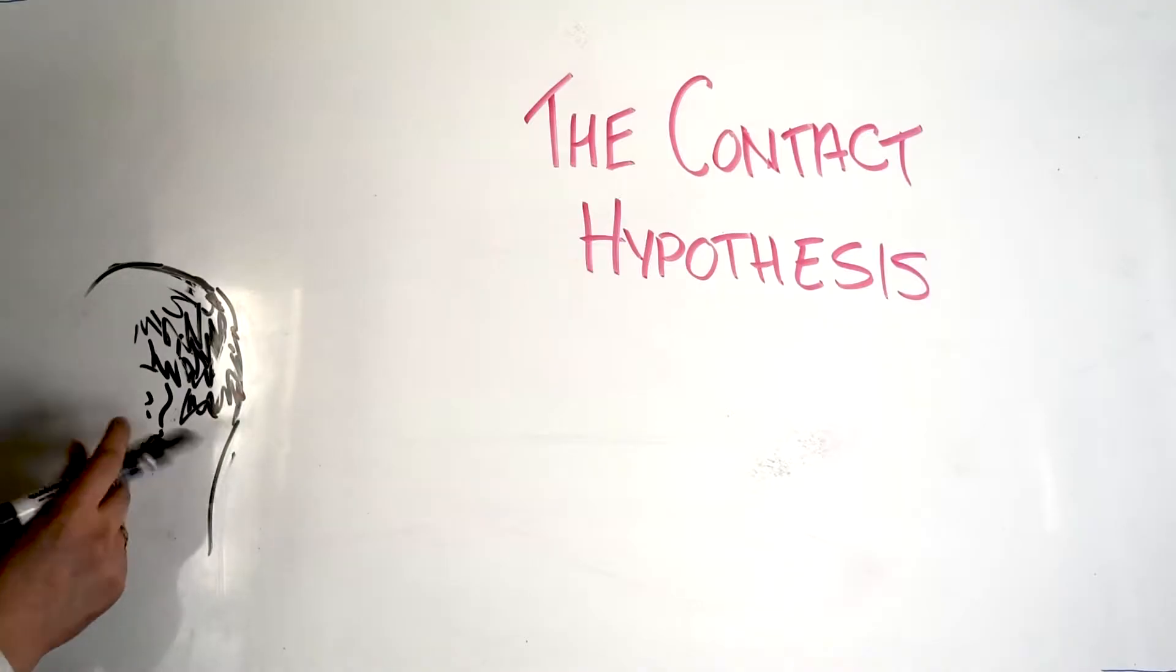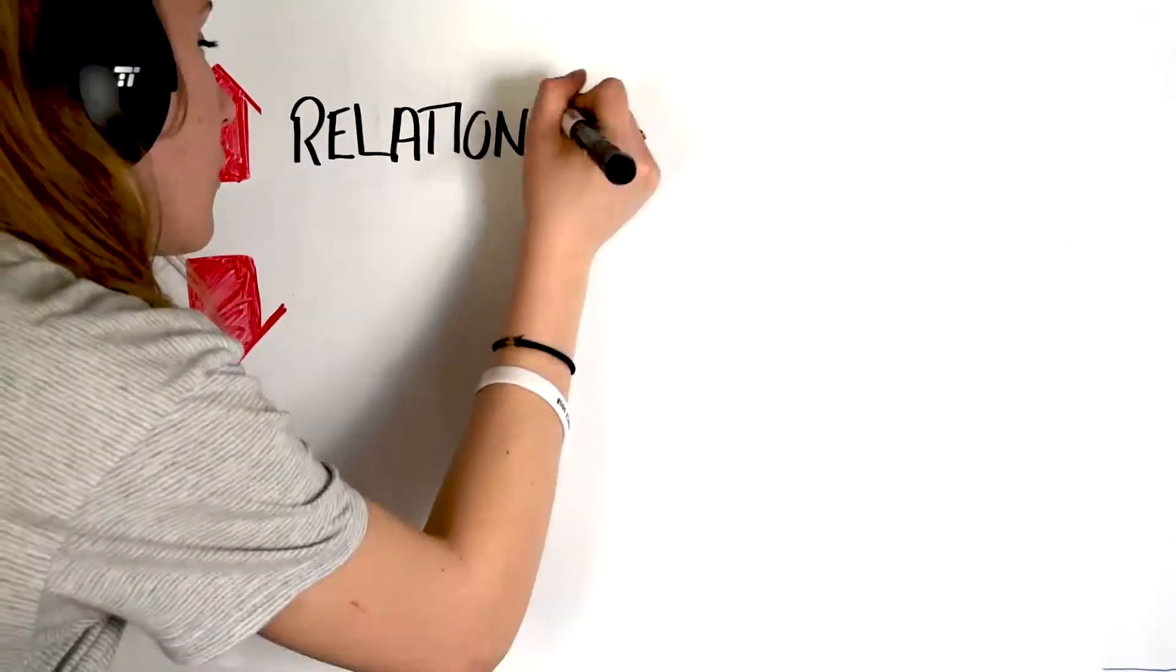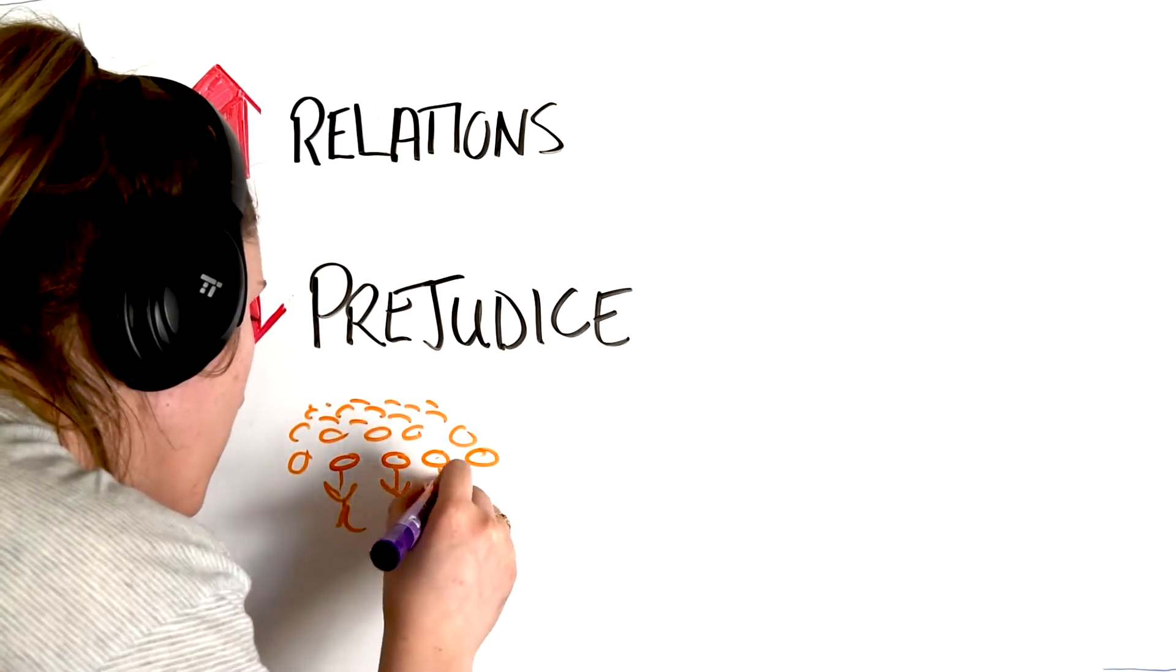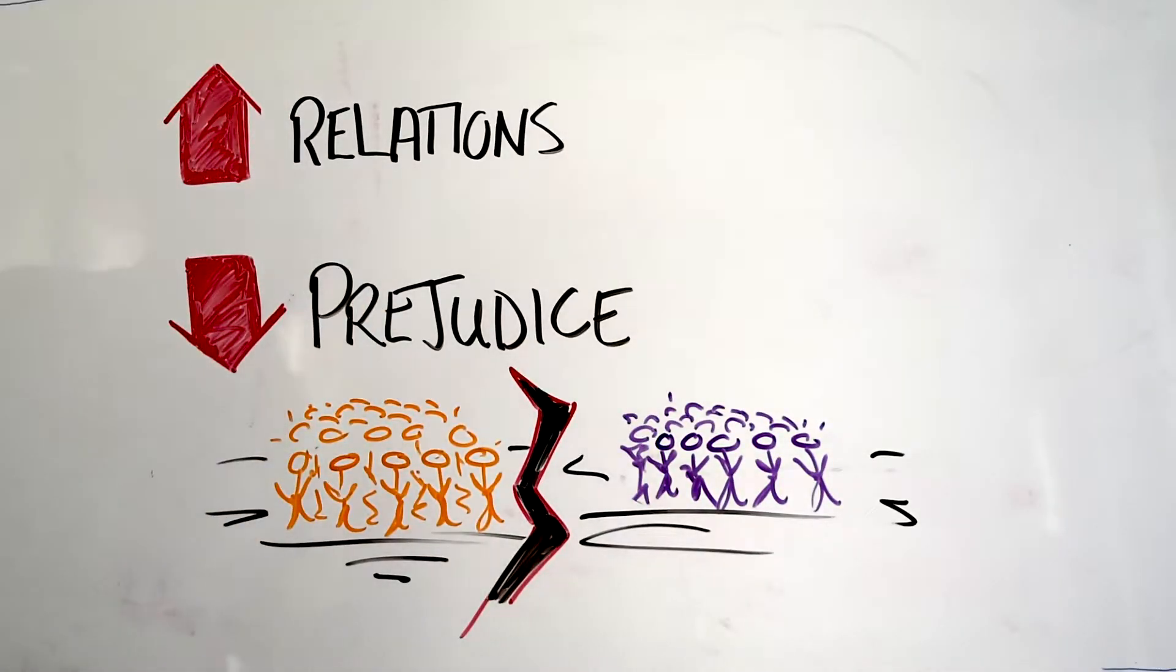The contact hypothesis, also known as the intergroup contact theory, was first brought up by American psychologist Gordon Allport. Allport proposed this as a method to improve relations among groups experiencing conflict by reducing prejudice under appropriate conditions.